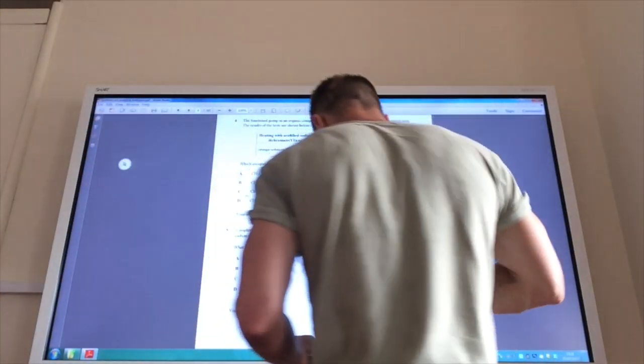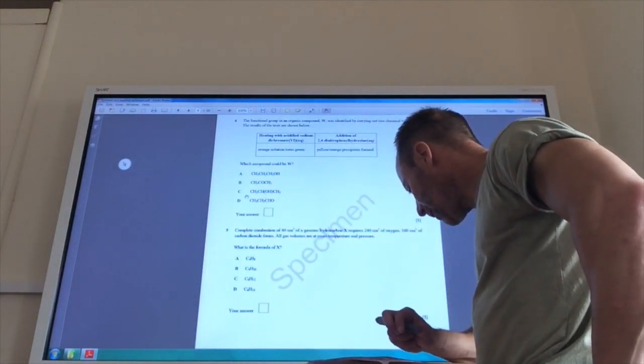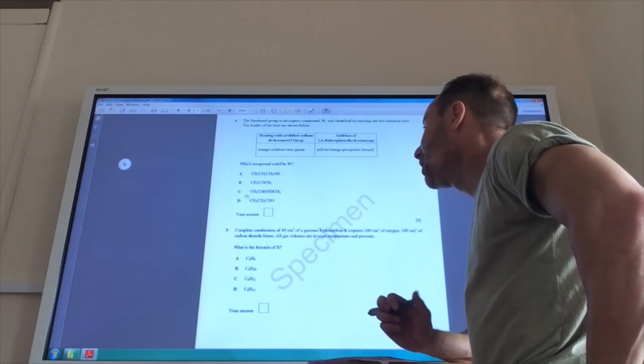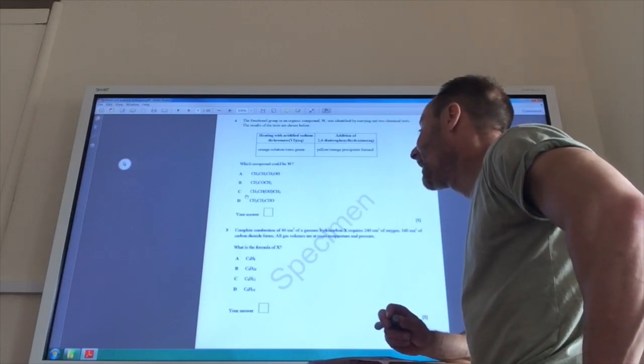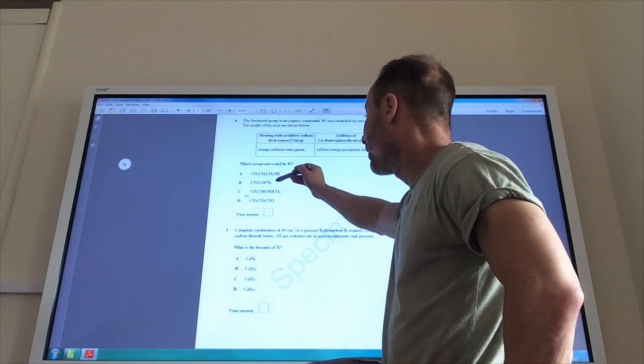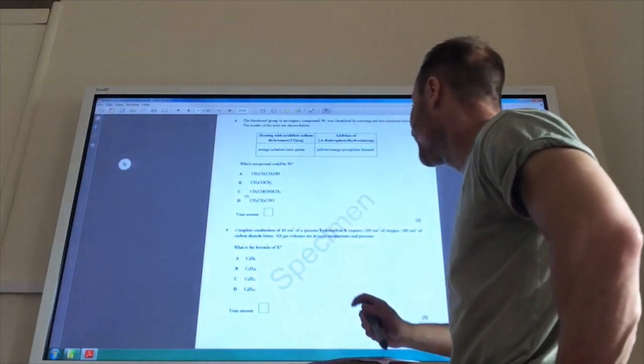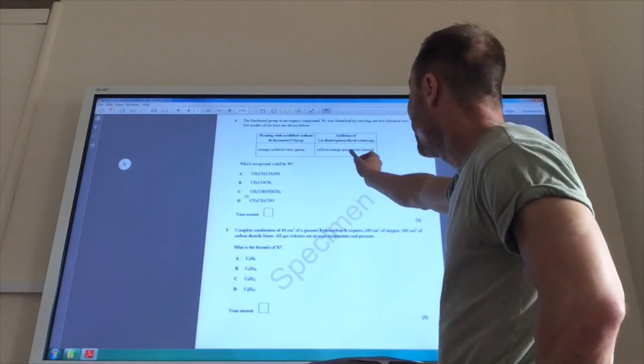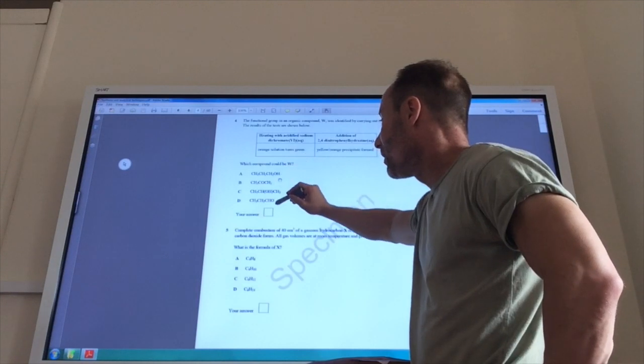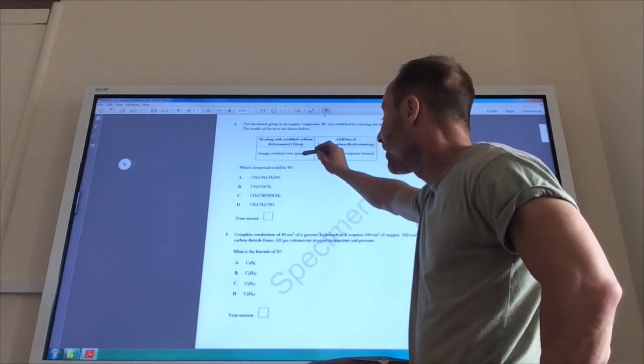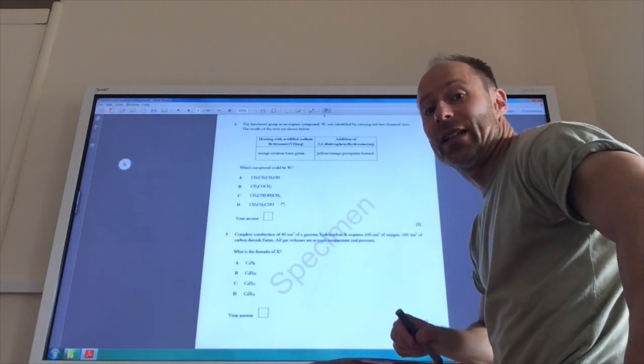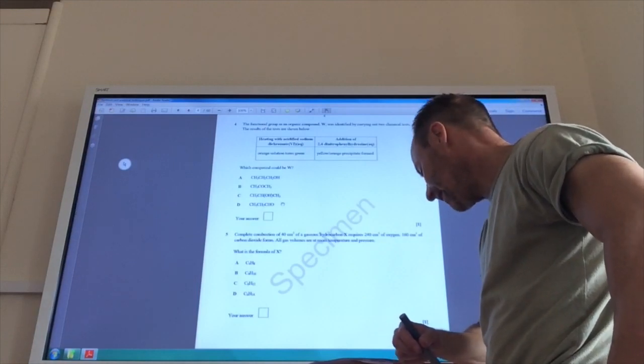Right, okay. So I've got a functional group and it was identified by carrying out these two tests. Acidified dichromate, orange to green. So that could be an alcohol. What are these? These are all alcohols. That's an alcohol. That's an alcohol. That's a ketone and that's an aldehyde. If it forms a yellow-orange precipitate, then it's either going to be a ketone or it's going to be an aldehyde. But because it reacts with acidified dichromate, it must be an aldehyde because aldehydes can be oxidized to carboxylic acids. So the answer to that one is D.